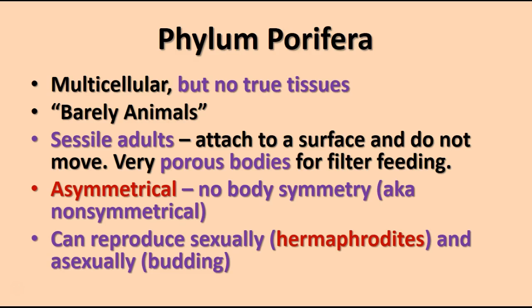The adult sponges are sessile, meaning they attach to a surface and don't move around from place to place, though they do have some cells that move. They have very porous bodies for filter feeding — lots of pores on the surface and inside the body, with cells that use flagella to create a current which pulls water into the sponge, allowing them to filter out phytoplankton, zooplankton, and other small particles.